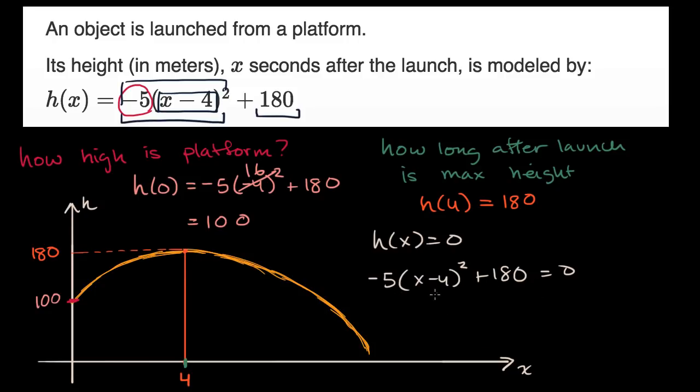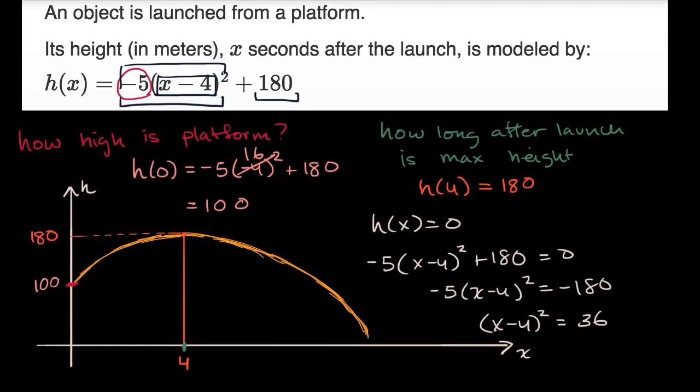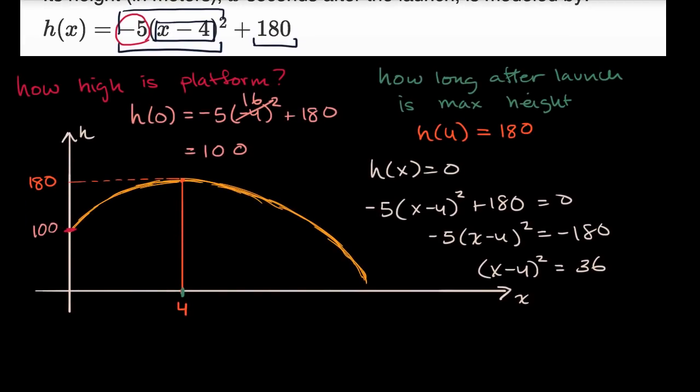We can subtract 180 from both sides. You get negative five times x minus four squared equals negative 180. We can divide both sides by negative five. We get x minus four squared equals 36. Then we can take the plus and minus square root. So x minus four could equal six or x minus four equals negative six.